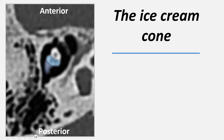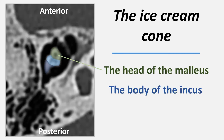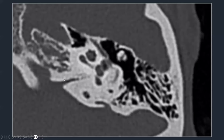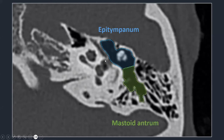On magnified images, we can clearly see the head of the malleus, the body of the incus underneath, and the short process of the incus pointing posteriorly in a triangular shape. The aditus ad antrum is the opening between the epitympanum and the first and largest mastoid air cell — the antrum — which communicates directly with the epitympanum.